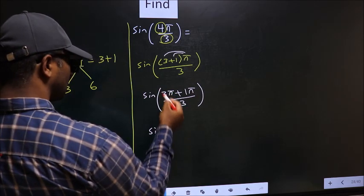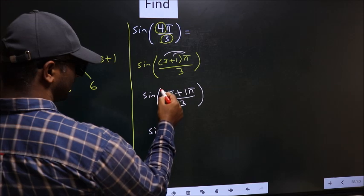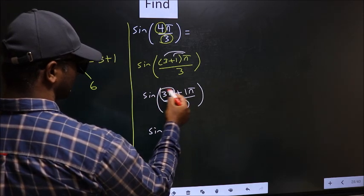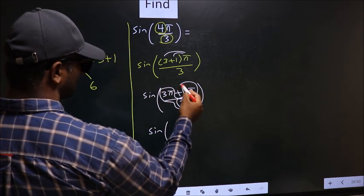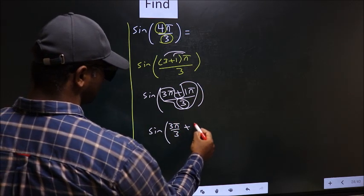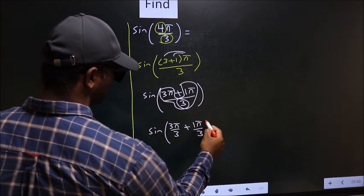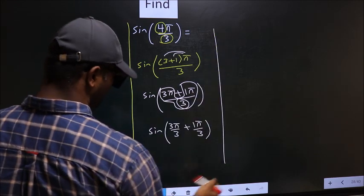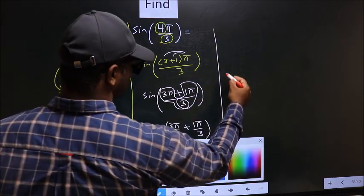Sin of... Now you should split the denominator in this way. That is 3π by 3 plus 1π by 3. Next, sin of...